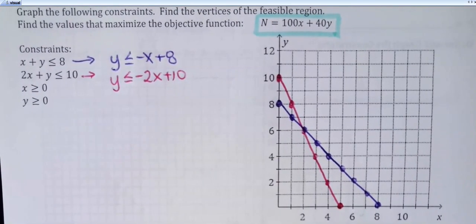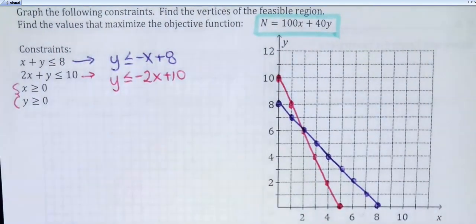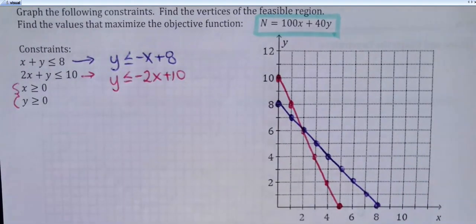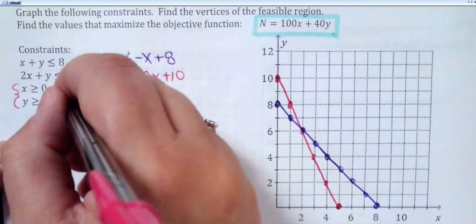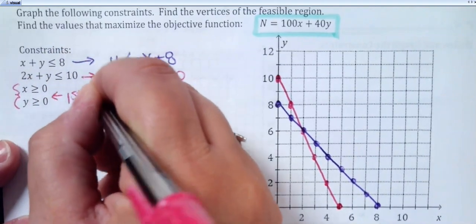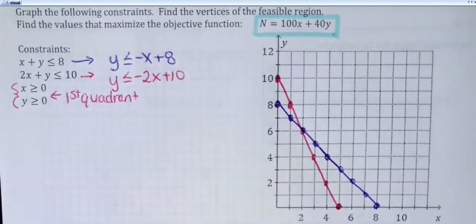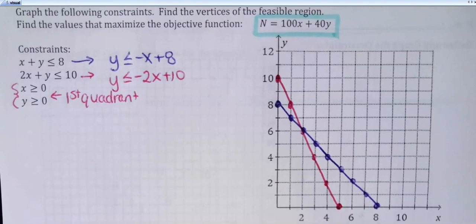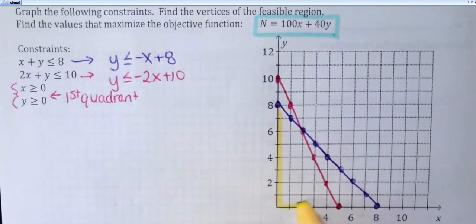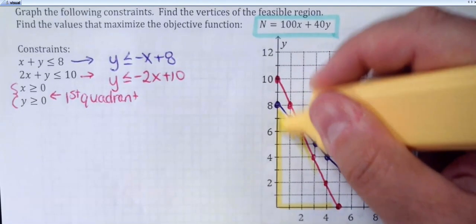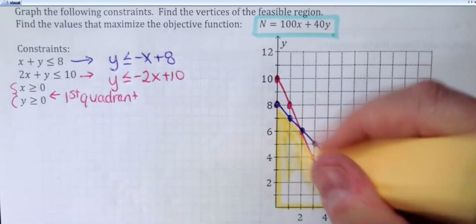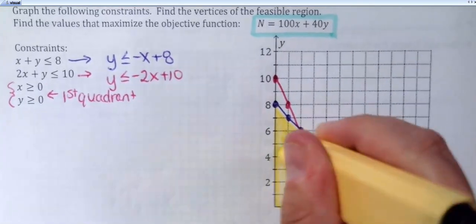The constraints x is greater than or equal to 0 and y is greater than or equal to 0 — one would be on the x-axis, one would be the y-axis. Anytime you see these constraints, this set just leaves you in the first quadrant. They're in almost all the word problems because x has to be a positive number or 0, and y has to be a positive number or 0. That just keeps you in the first quadrant. So my feasible region is going to be less than both of those lines and in the first quadrant.